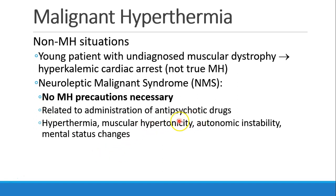NMS happens when patients receive antipsychotic drugs like Haldol. They get hyperthermia, muscular hypertonicity, autonomic instability, and mental status changes — it sounds like MH, but it's not, and there doesn't seem to be any significant crossover between these two syndromes.